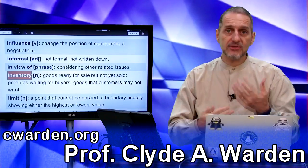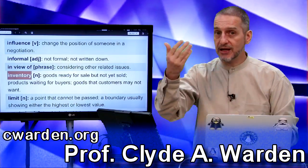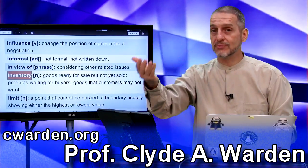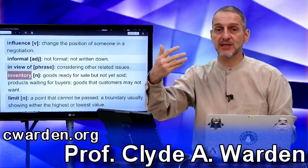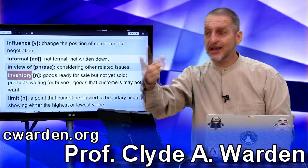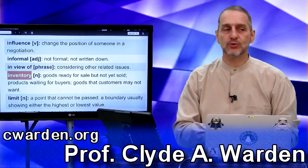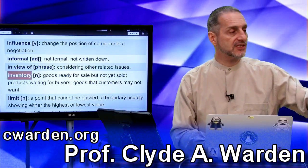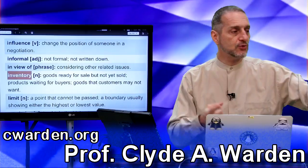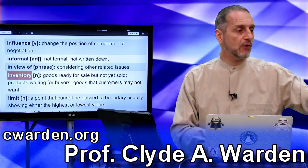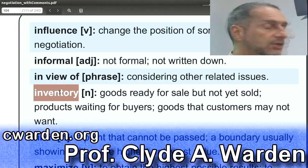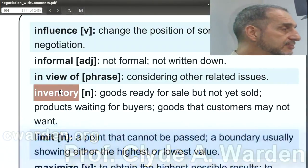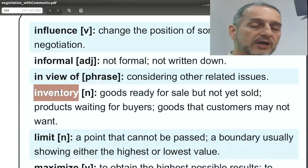On the other side, you could tell your negotiators to say something like: I know that your inventory is high. If your inventory is high, you should give me a lower price because I'm going to help you sell some of your inventory. So this can be used in either way.